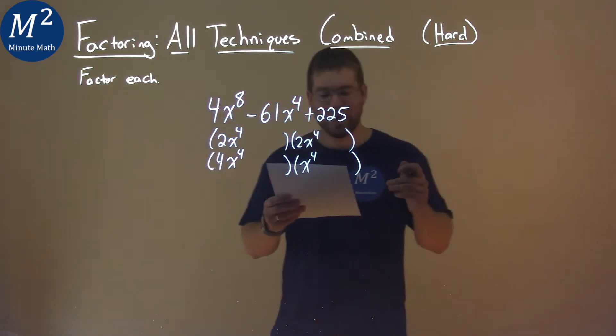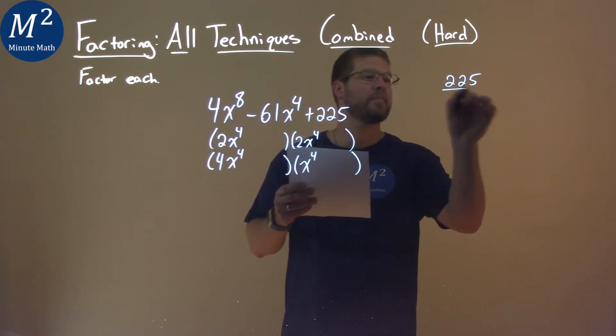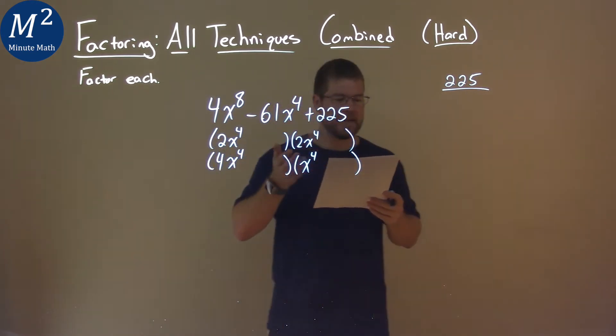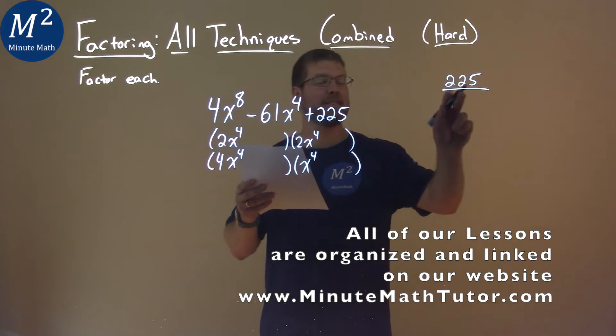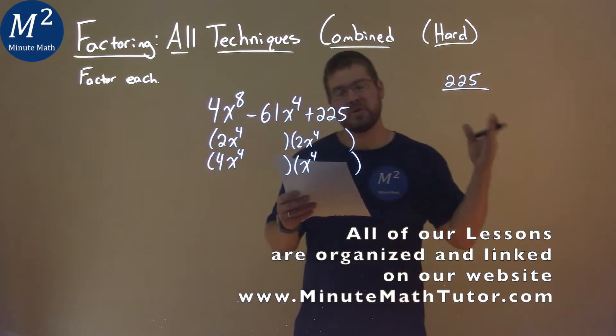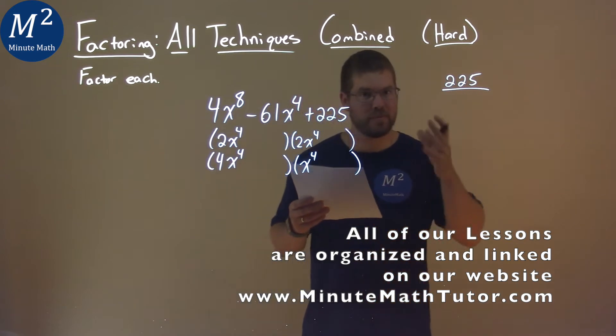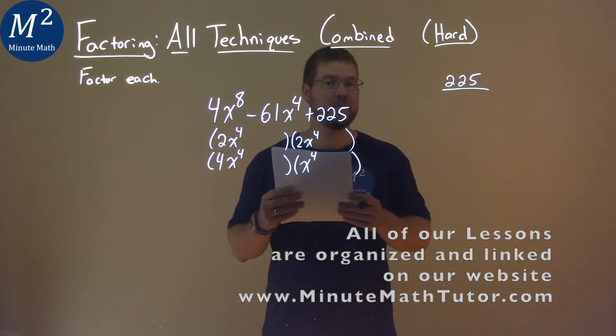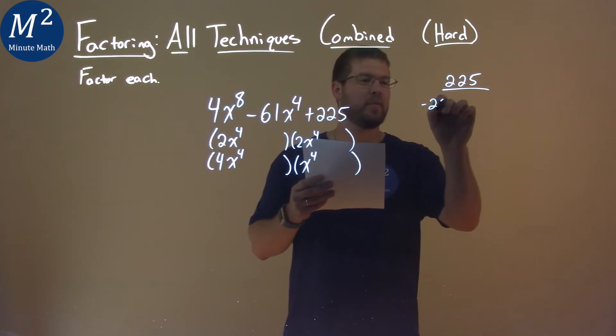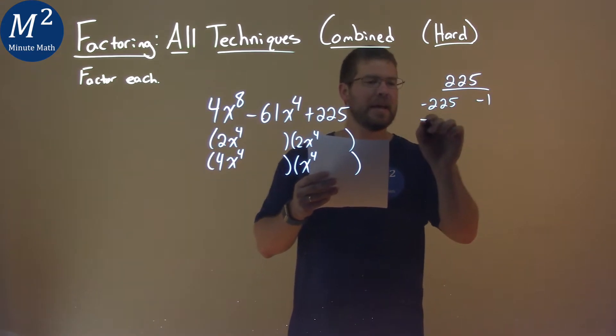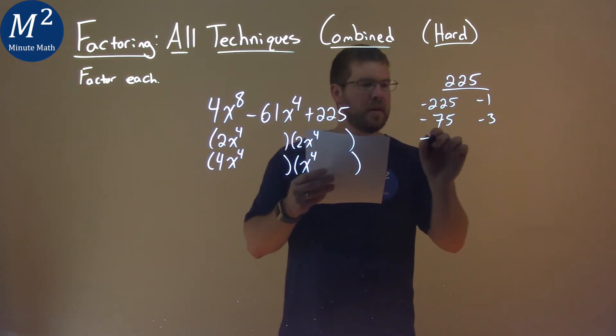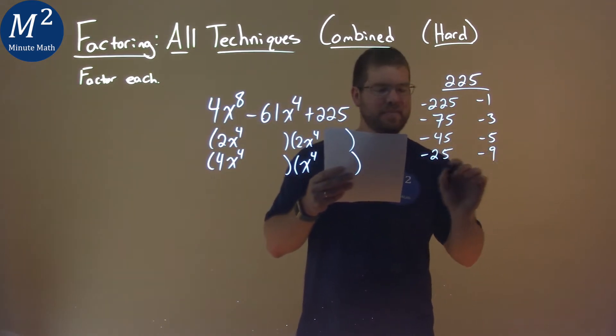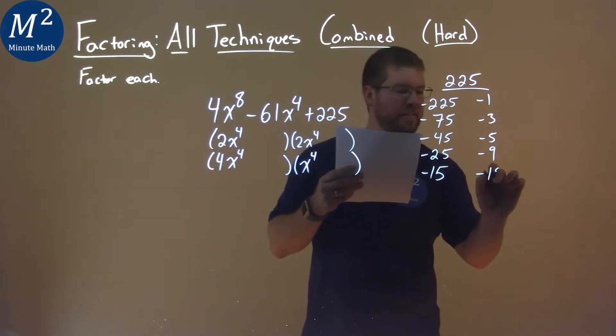We now have to look at our c value 225 and our b value is negative here. Since our b value is negative and 225 c value is positive, that means the two numbers that multiply to 225 have to be negative. Two negatives multiply make a positive. So now we're going to go through all the numbers that multiply together to be negative 225: negative 225 and negative 1, negative 75 and negative 3, negative 45 and negative 5, negative 25 and negative 9, and negative 15 and negative 15.